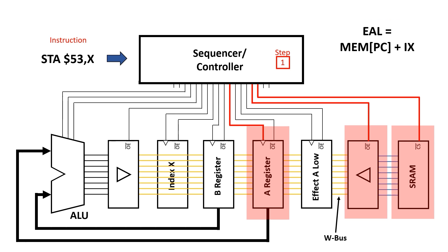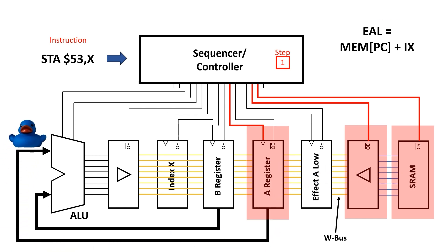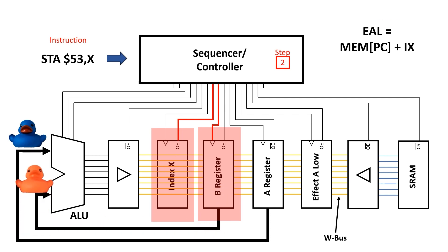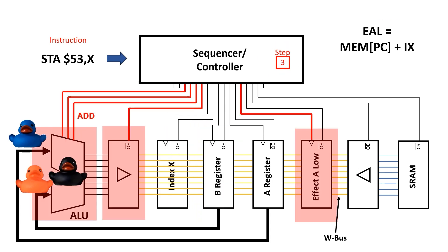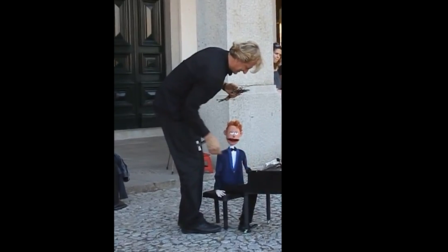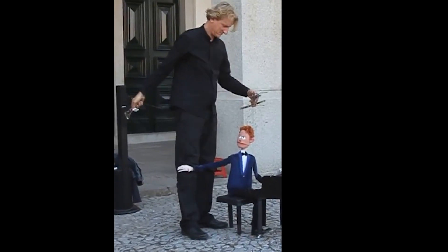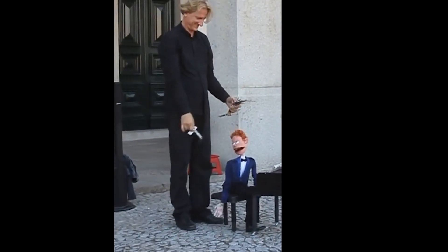The sequencer goes through a number of steps to coordinate the movement of data through the machine, and its job is much like that of the puppeteer — pulling on the right strings at the right time to get the machine to do what it wants. Here we can see it reading a value from memory, storing it in the A register and presenting it to the ALU, copying the contents of the index X register into the B register and presenting that to the ALU, then adding these two values together to form the sum and storing the result in the effective address A-low register.